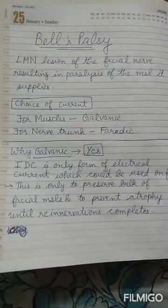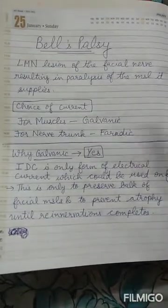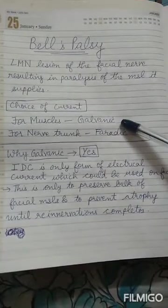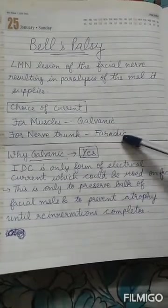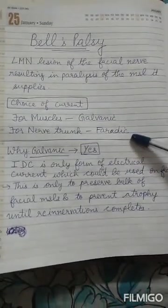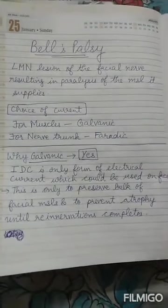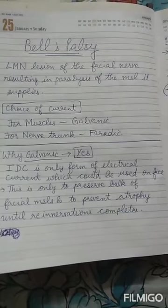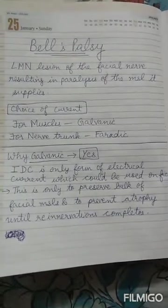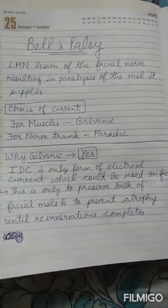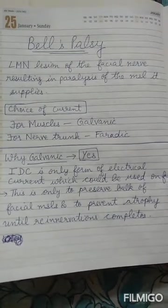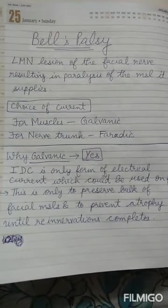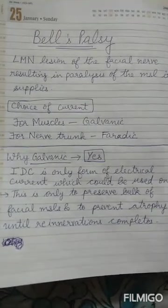Talking about the current that could be used for the muscles, we use galvanic or interrupted direct current, and for the nerve trunk we use faradic type current. We use galvanic current because it is the only form of electric current which could be used on the face, and it mainly preserves the bulk of the facial muscles and prevents atrophy until the re-innervation of the muscle completes.